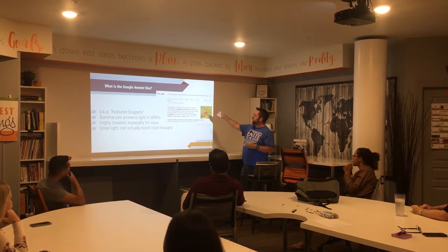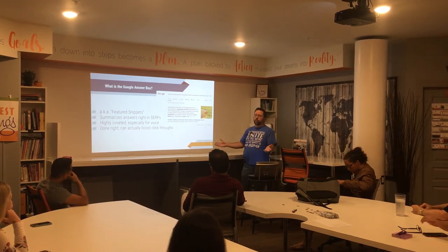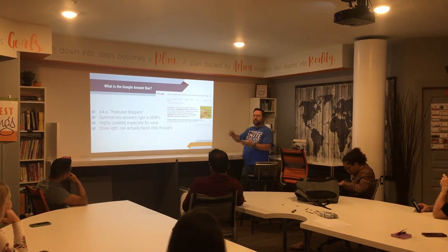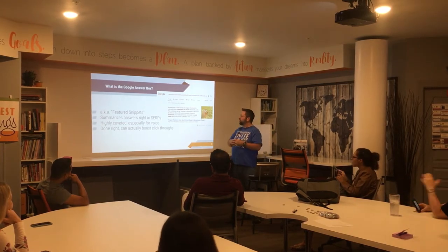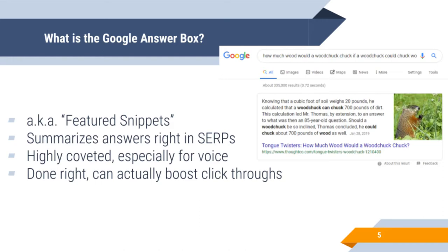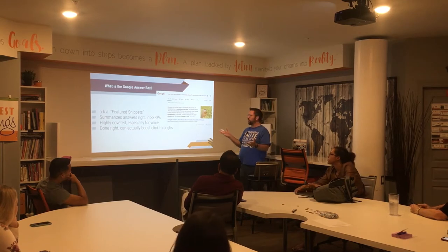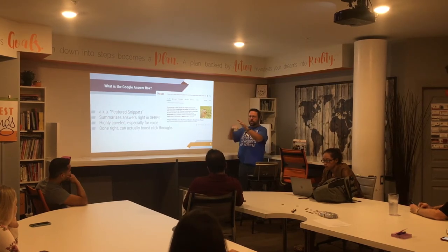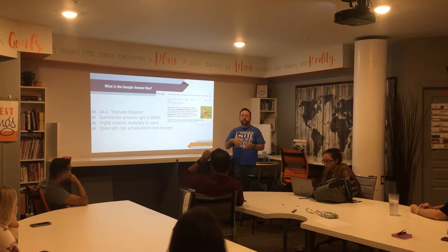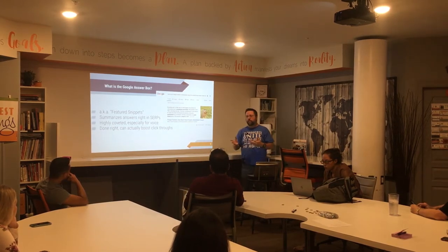The Google answer box is what you see here — I typed in 'how much wood would a woodchuck chuck' and we get an actual answer from an authoritative website. Somebody knows a lot about woodchucks, so they gave this long calculated mathematical answer. That's what a featured snippet is. Basically it summarizes an answer right there in the search engine results page, always at the top.